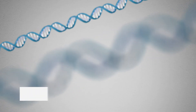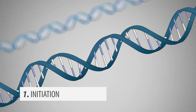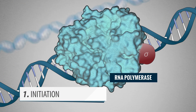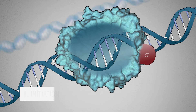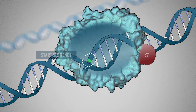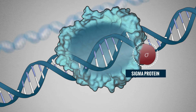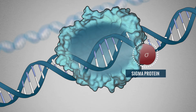During the first stage, initiation, RNA polymerase binds to the DNA and finds its start sequence. A sigma protein, which assists RNA polymerase in reading start signals from the DNA, must be present for the initiation stage.